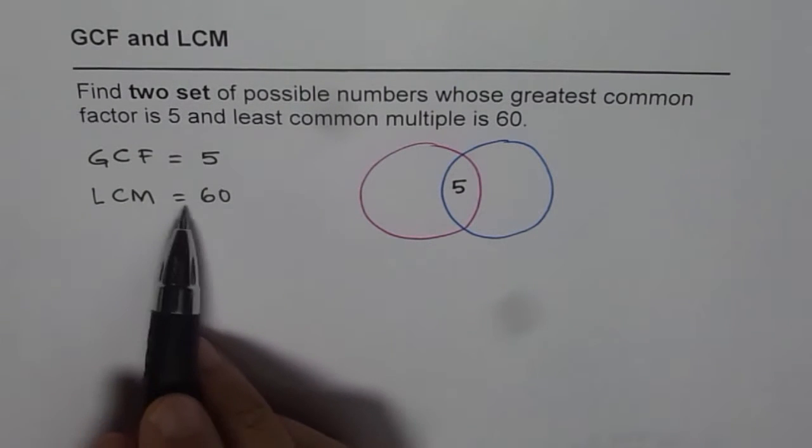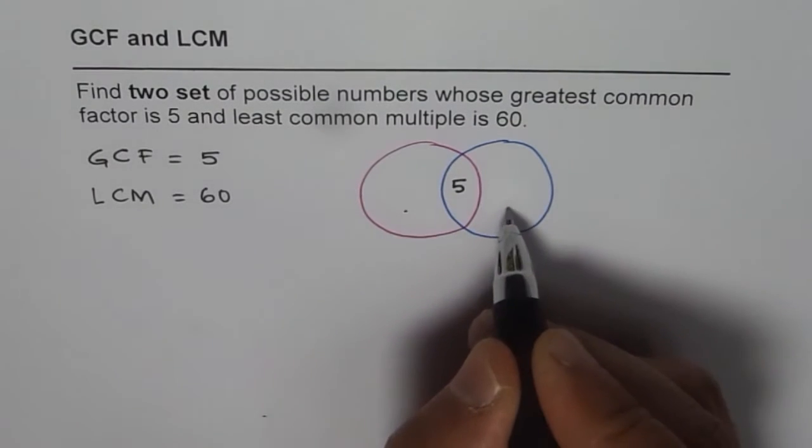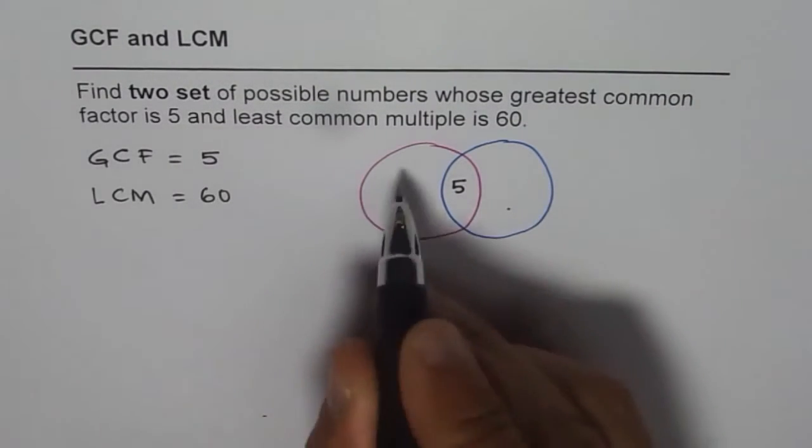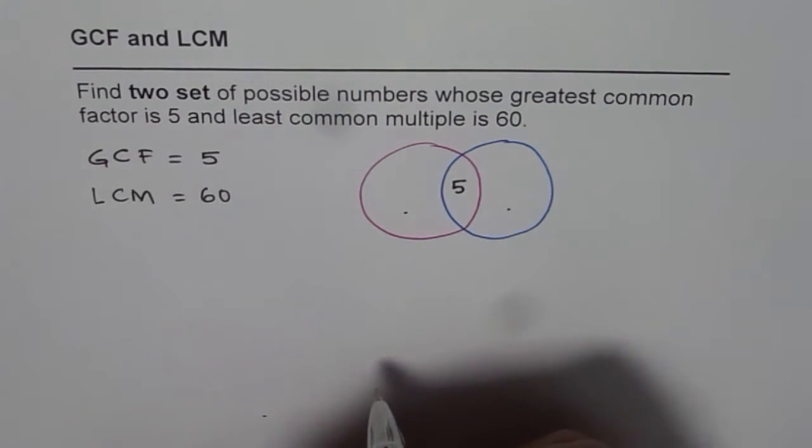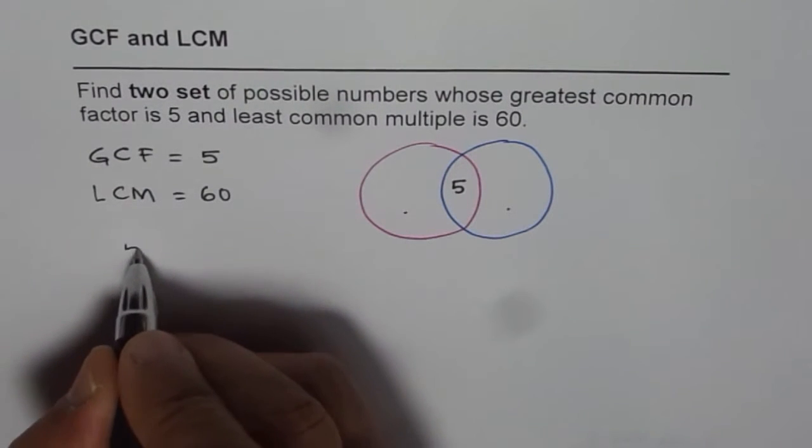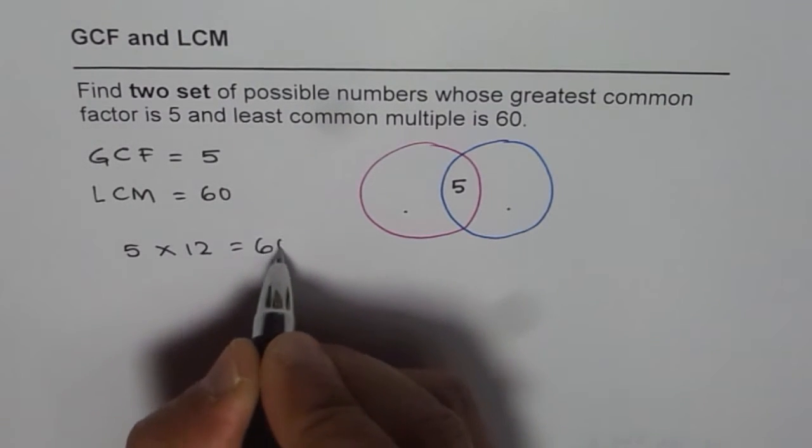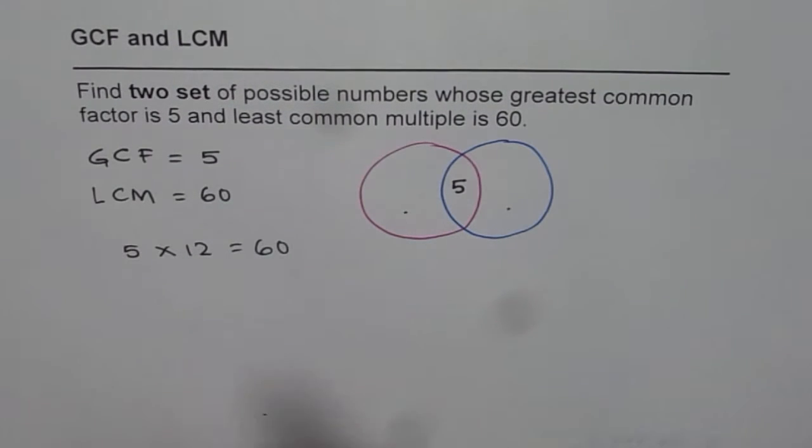When we say least common multiple is 60, we mean when we multiply all these numbers, we get 60. Now to get 60 from 5, we know 5 times 12 is 60. Or 60 divided by 5 gives you 12.